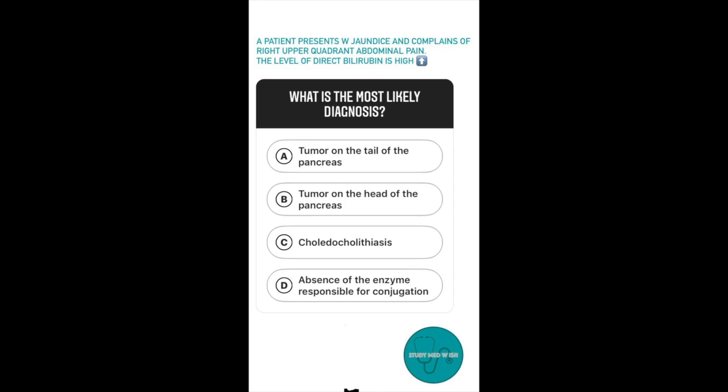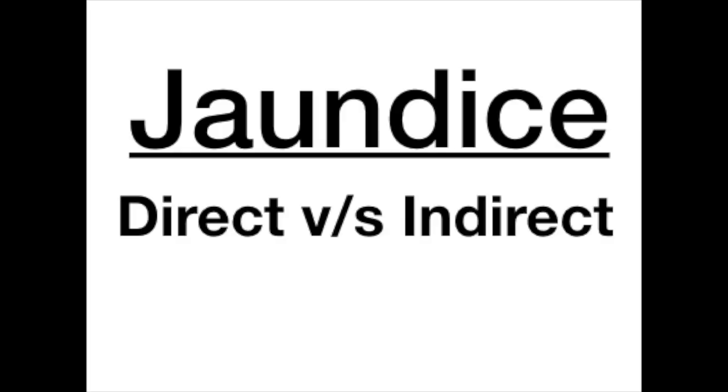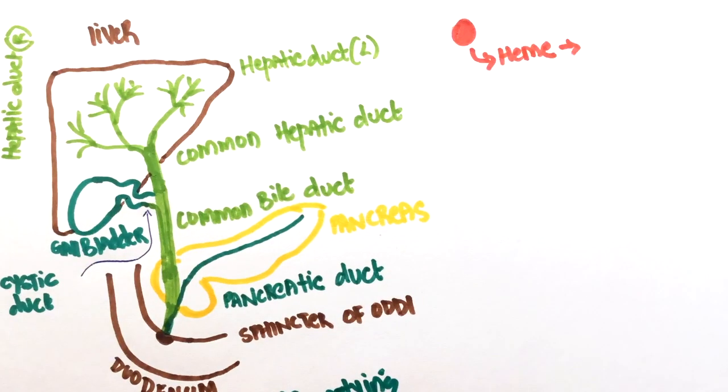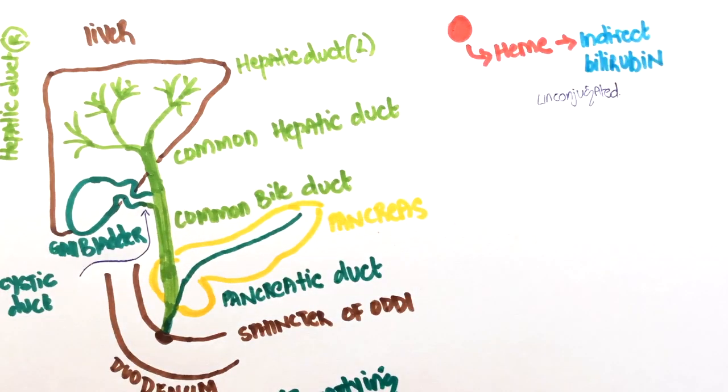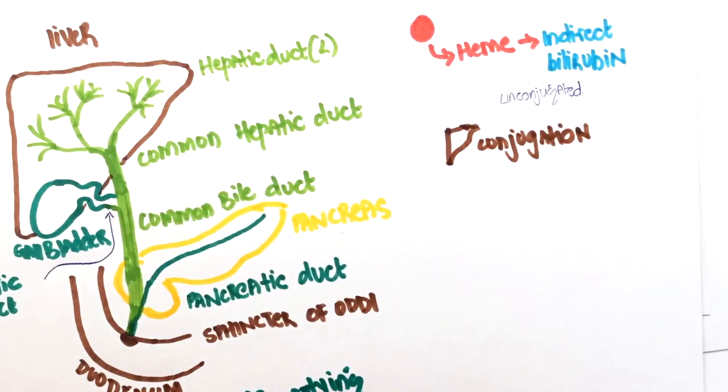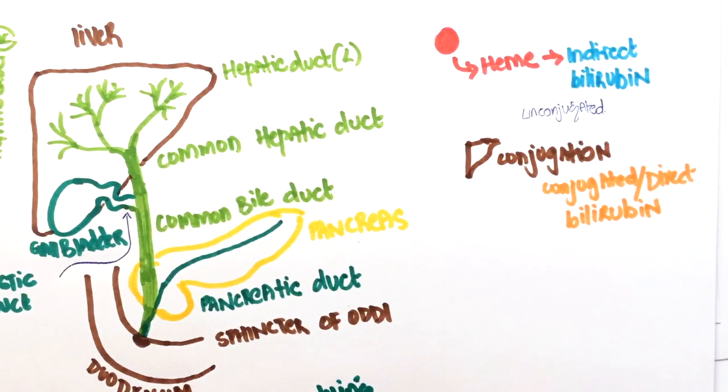We're dealing with two things here, jaundice and abdominal pain. Whenever a patient comes in with jaundice, we should always check if it's caused by direct or indirect bilirubin. When red blood cells break down in the spleen, they produce indirect bilirubin. This is not conjugated and is water-soluble. When this undergoes conjugation, it becomes water-insoluble and is now known as direct bilirubin. The process of conjugation takes place in the liver.